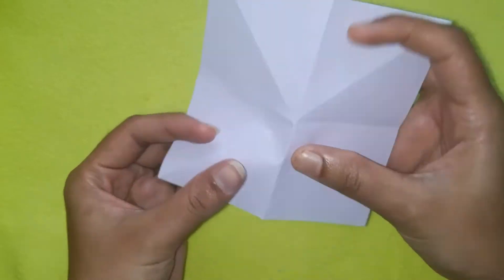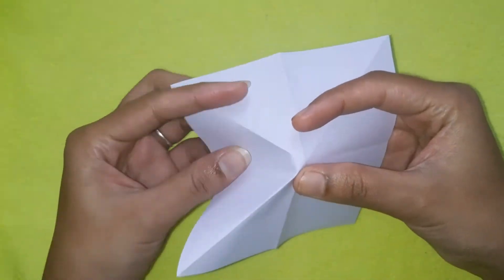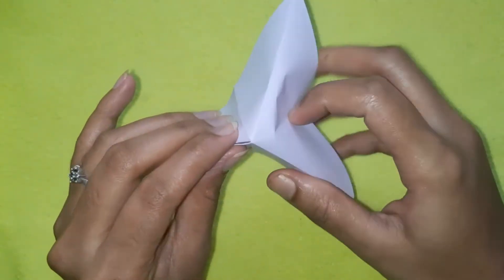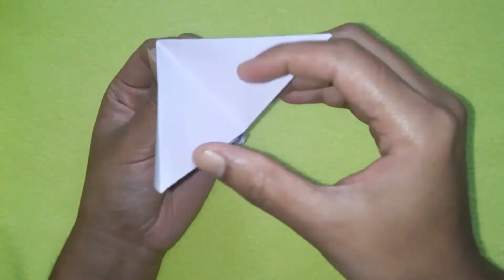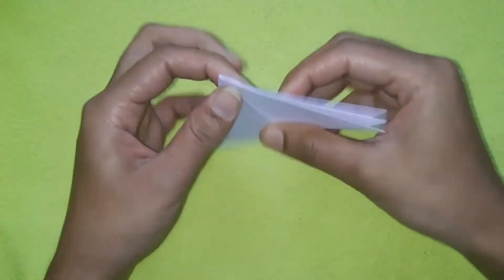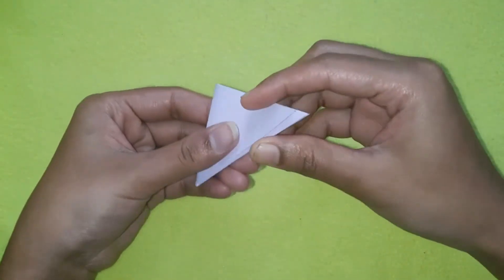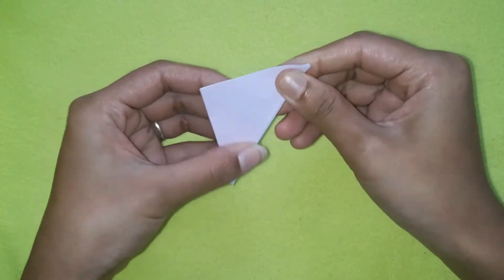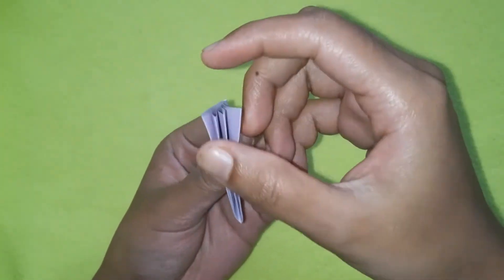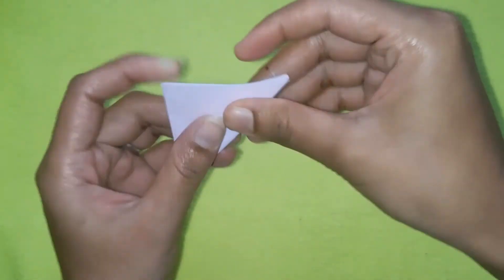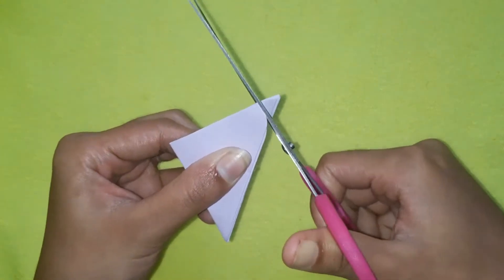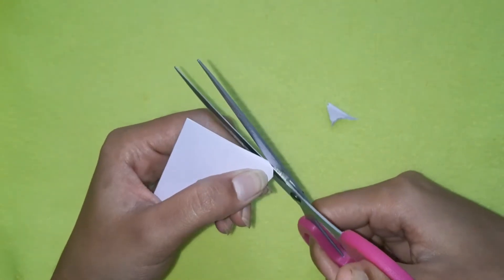Then, cut the edge on the side. Cut it in a small shape.